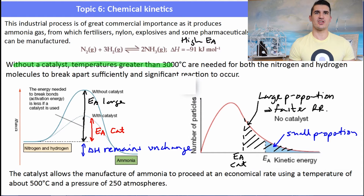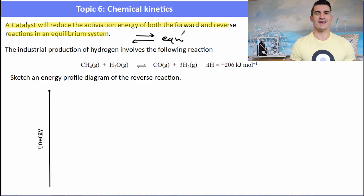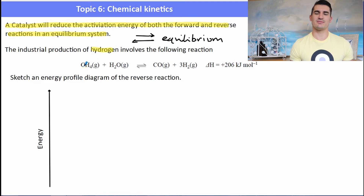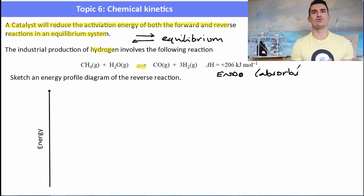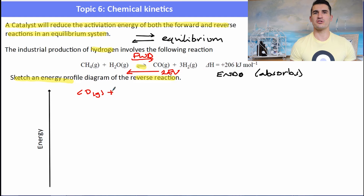A catalyst will also reduce the activation energy of both the forward and reverse reactions. We touch on forward and reverse reactions in the equilibrium topic — whenever you see the double-headed arrows it's an equilibrium system, so look out for those. For example, the industrial production of hydrogen gas is an equilibrium system where we have methane and water reacting to form carbon monoxide and hydrogen. We know it's an equilibrium system because of the double-headed arrows in the reaction. This is also an endothermic reaction, so we would have to give it energy for this process to go ahead. A question might say: sketch an energy profile diagram for the reverse reaction — so be really careful with the wording. The forward reaction is read from left to right; the reverse reaction is read from right to left, so we've got to flip it around. So we would rewrite it in the reverse direction: carbon monoxide plus hydrogen gas forming water and methane.